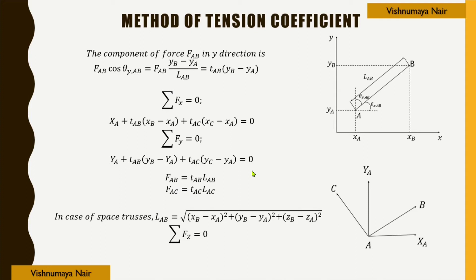From these two equations we can get the values of tab and tac, and after obtaining these values we can find fab and fac by multiplying the tension coefficient by the respective member lengths: fab = tab·lab and fac = tac·lac.